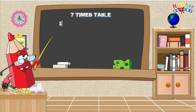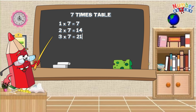Let's do a recap. 1 times 7 is equals to 7. 2 times 7 is equals to 14. 3 times 7 is equals to 21.